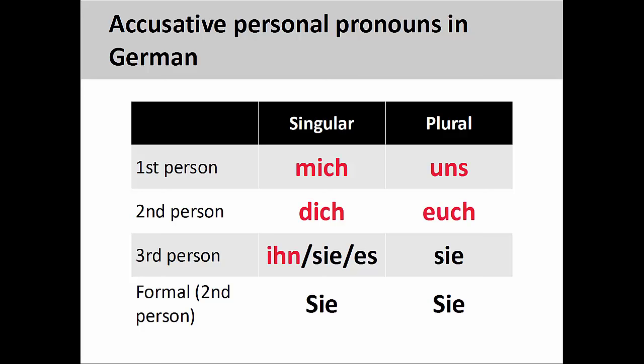The accusative personal pronouns in German are similar to the nominative pronouns, with the exception of the pronouns you see here in red. These are first- and second-person singular and plural pronouns, as well as the masculine third-person singular pronoun. You'll recall that the masculine definite article, der, is the only one that changes as it moves from nominative to accusative, so it makes sense that masculine personal pronouns follow the same pattern.